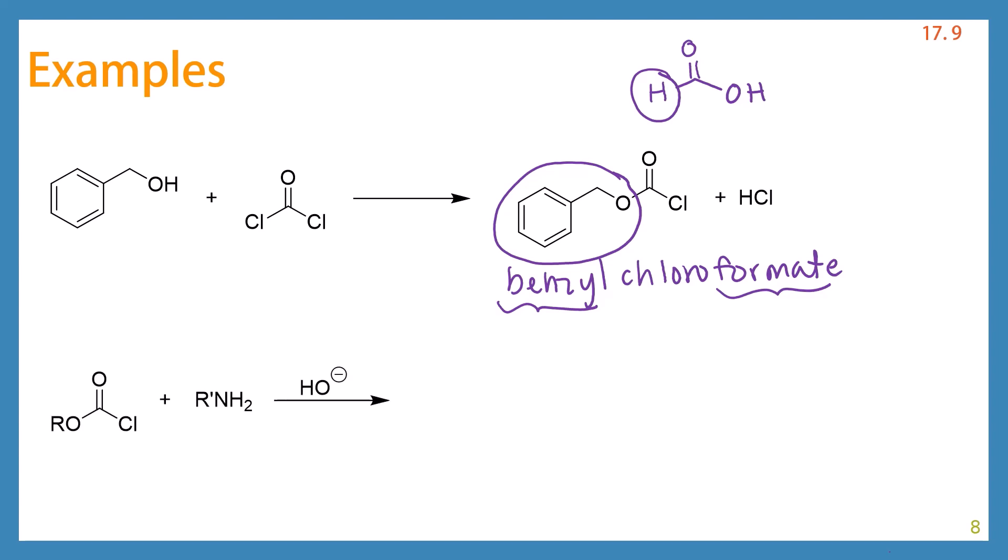If we take an alkylchloroformate and react it with a primary amine in the presence of base, we will end up creating a new functional group that has both an ester and an amide. This is called a carbamate. And another term to describe this functional group would be urethane. So this is actually the functional group formed in the polymers that are called polyurethanes.